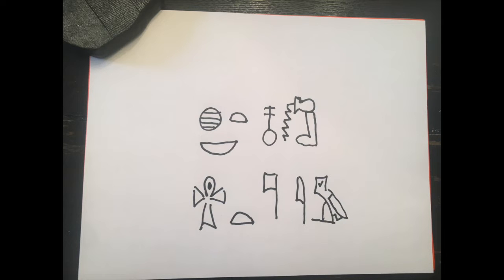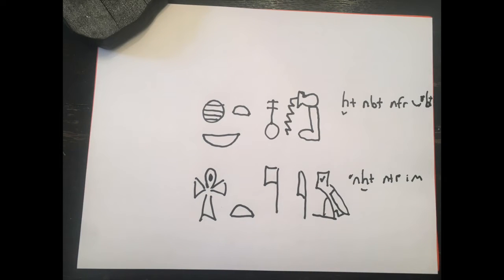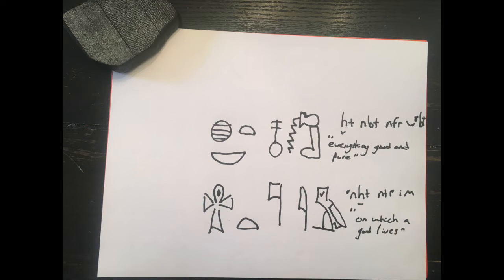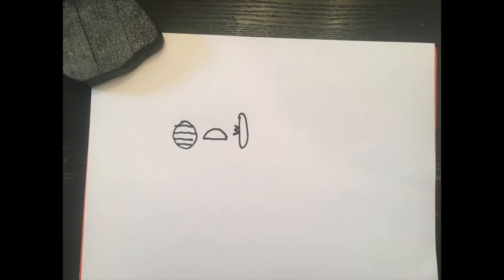So what we're looking at here are the words: khut nub nefer wabet and ankh nefer im. You'll see them a lot in conjunction with each other. They translate to 'everything good and pure on which a god lives,' or 'on which a god may live.' So let's break apart both of these.